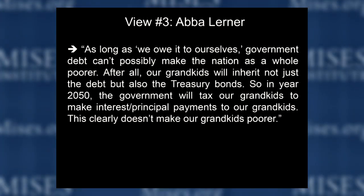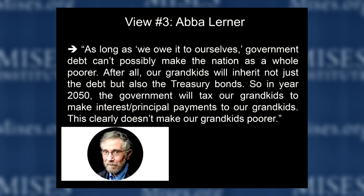View number three is associated with Abba Lerner — you might know that name from the socialist calculation debate. His position, paraphrased fairly: 'As long as we owe it to ourselves, government debt can't possibly make the nation as a whole poor. After all, our grandkids will inherit not only the debt but also the treasury bonds. So in the year 2050, the government will tax our grandkids in order to make interest and principal payments to our grandkids. This clearly doesn't make our grandkids poorer.' In modern times, Paul Krugman has also espoused this view.